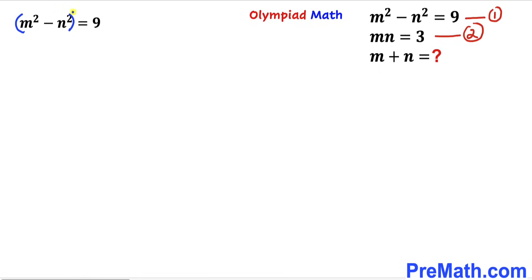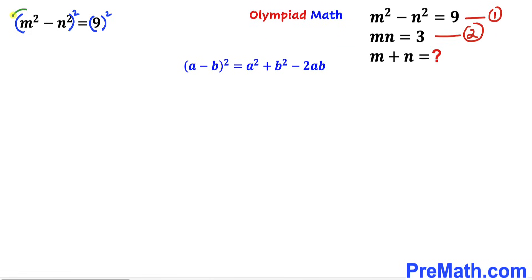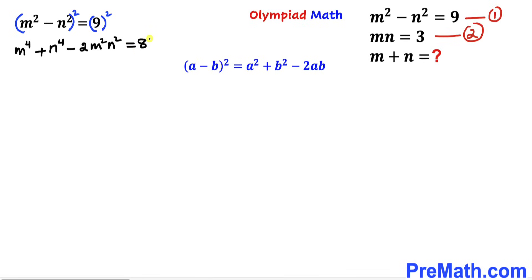Let's focus on equation 1. I'm going to take a square on both sides of this equation. Recalling the identity (a minus b) whole square equals a squared plus b squared minus 2ab, and applying it to the left-hand side binomial — with a equal to m squared and b equal to n squared — we get m to the power 4 plus n to the power 4 minus 2 times m squared times n squared equals 81.